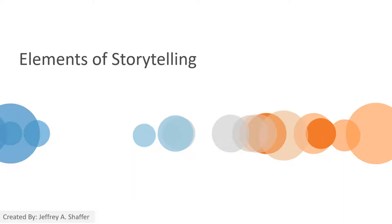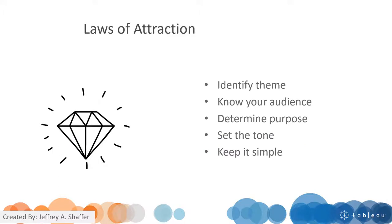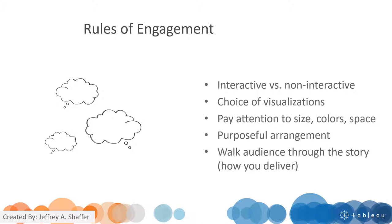Let's look at the elements of storytelling. At the highest level, we are trying to attract the audience and engage with them to deliver a punchline. The law of attraction involves identifying the theme, who the audience is, and what the message is — that sets a tone and keeps it simple. The rule of engagement asks whether the visualization is interactive or static. For the final project, you will be creating interactive visualizations. As you create visualizations in the future, keep in mind what is the best choice for the visualization to display.